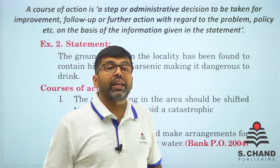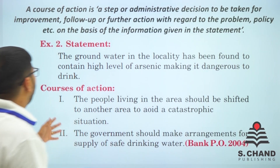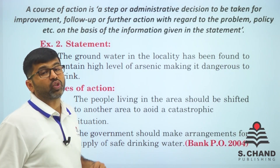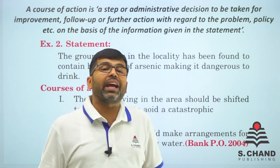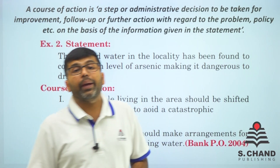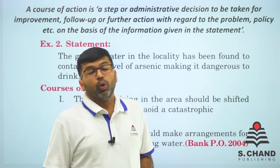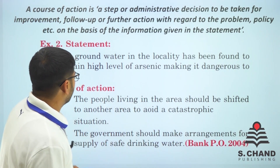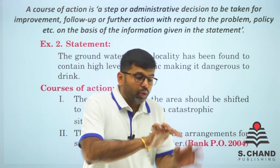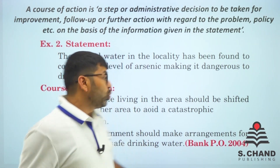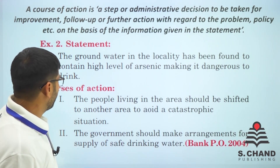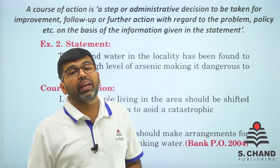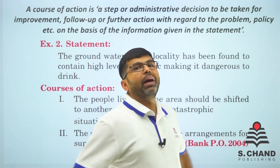What course of action should be taken? Course of action I: 'The people living in the area should be shifted to another area to avoid a catastrophic situation.' Course of action II: 'The government should make an arrangement for supply of safe drinking water.' 'Catastrophic' means a very large disaster or calamity.